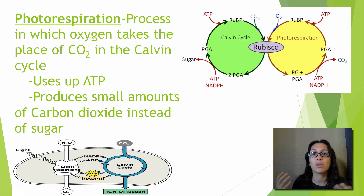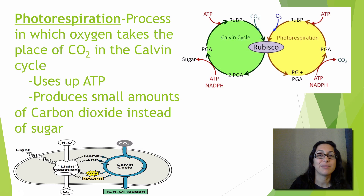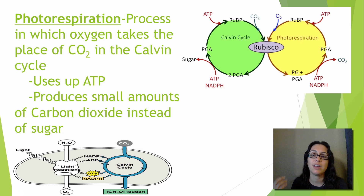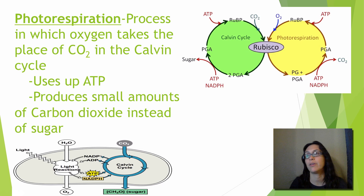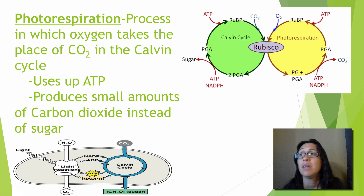There's no sugar here, and that's the whole point of the Calvin cycle — to get G3P made and use it for other things. Photorespiration is not a good thing. It's best thought of as oxygen hijacking the Calvin cycle with nothing productive coming out. The worst parts are that ATP gets used up — the cell's energy currency — on a dead-end process, and it produces small amounts of carbon dioxide instead of sugar.